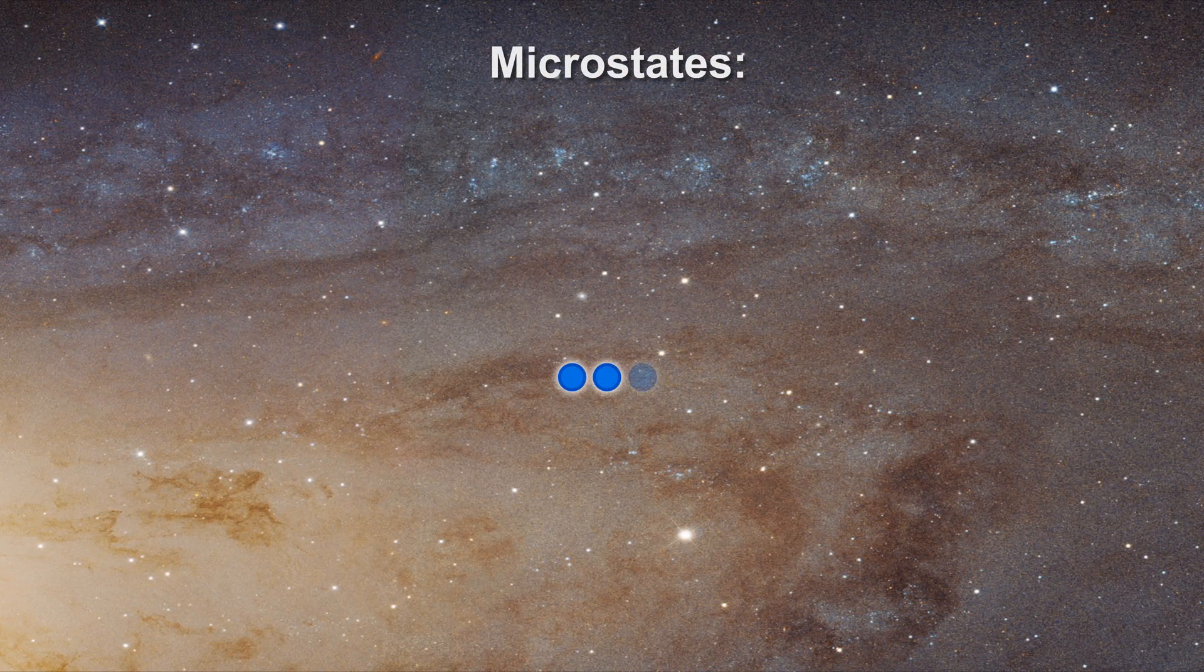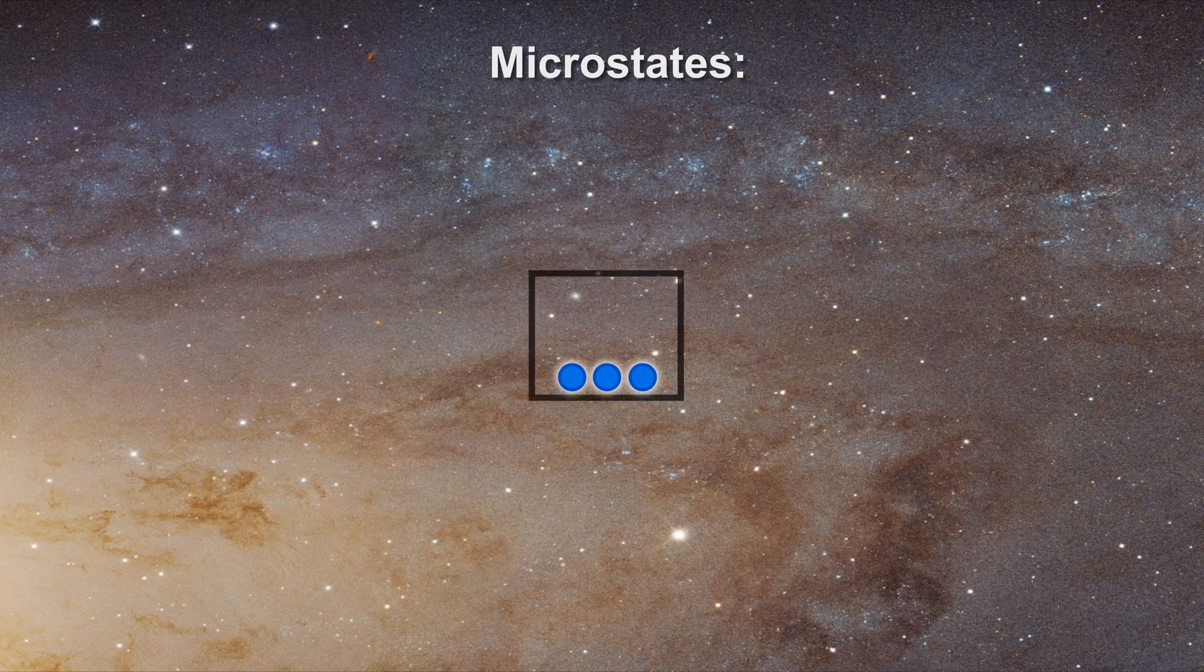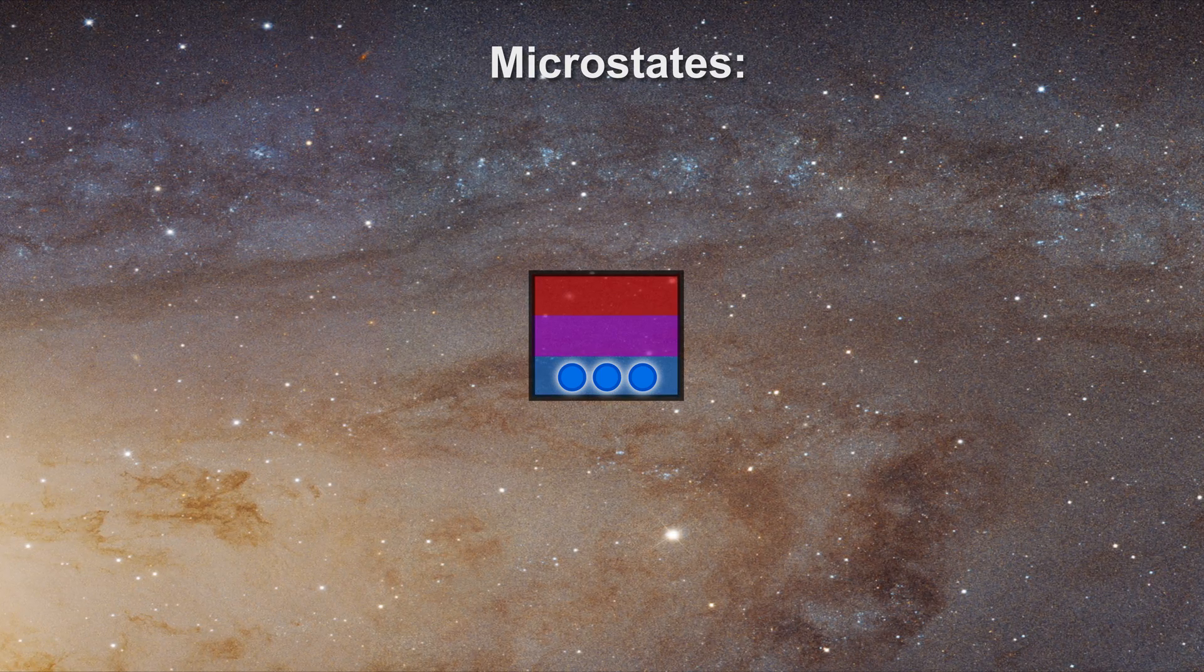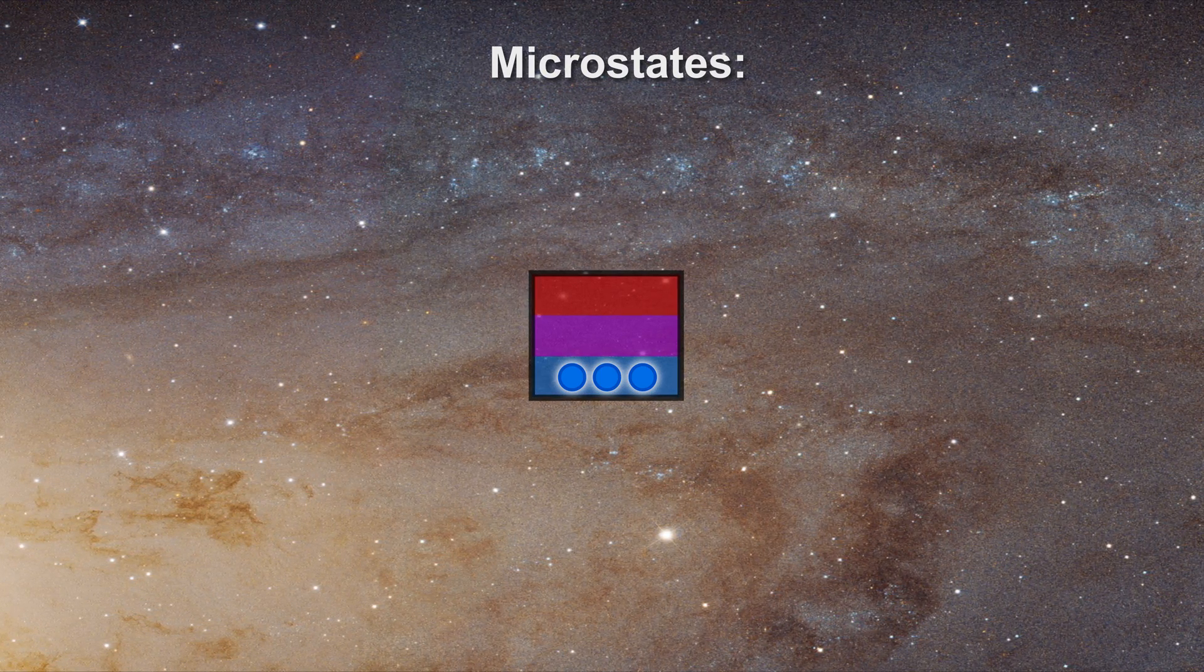To understand entropy and understand absolute zero, it is best to introduce the concept of microstates. A microstate can be represented as all the possible ways in which atoms can be placed into different energy levels. Imagine three atoms occupying a system which is divided into three connecting rooms. Each room is a different energy level.